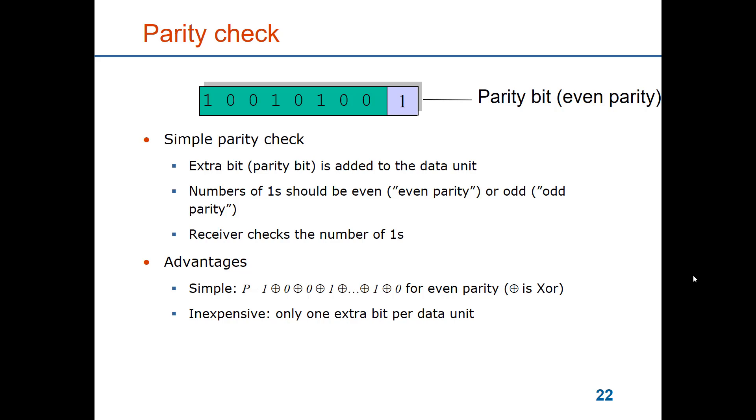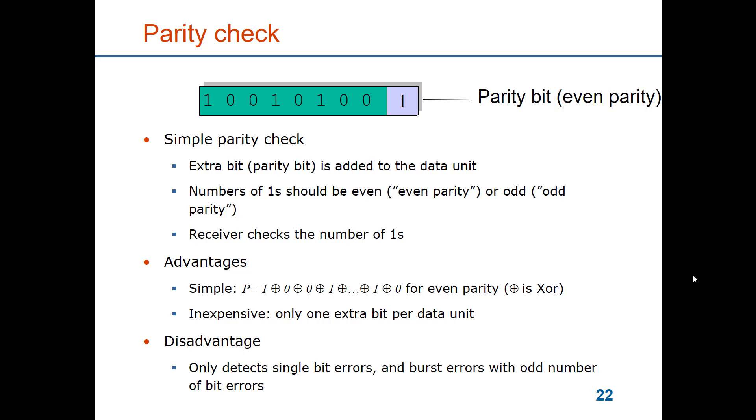The advantage of using parity check is that it is very simple to compute. You simply take all the bits in the data and you take an exclusive or operation between them, and the only redundancy that you add is one bit. The disadvantage, of course, is that it is a very weak check. If you would have two bit errors, then it wouldn't change the parity and you would not detect that. And only burst errors with odd number of bit errors would be detected.